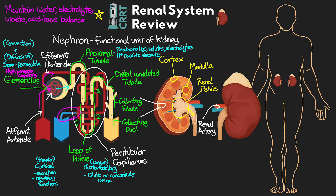The distal convoluted tubule plays an important role in the regulation of blood pressure while also regulating solutes by absorbing or excreting them. Anti-diuretic hormone, or ADH, aids in water reabsorption towards the end of the distal convoluted tubule. Some bicarbonate is reabsorbed here and hydrogen ions are actively secreted. The main waste products excreted through active filtration by the nephron are BUN, uric acid, and creatinine.